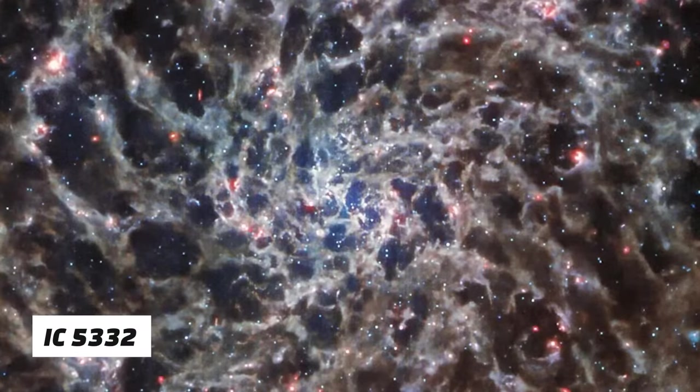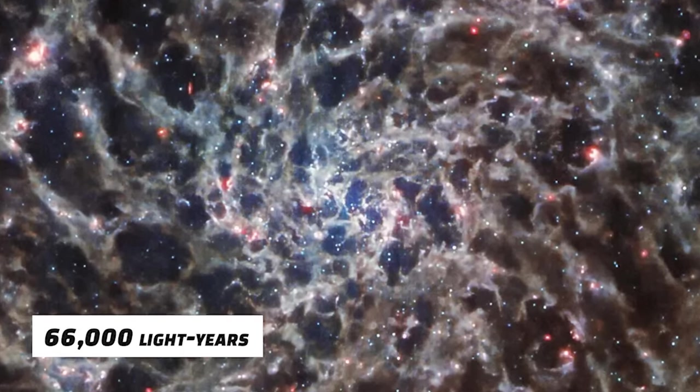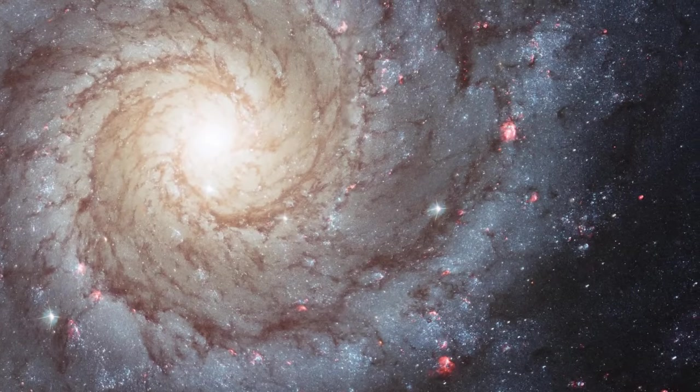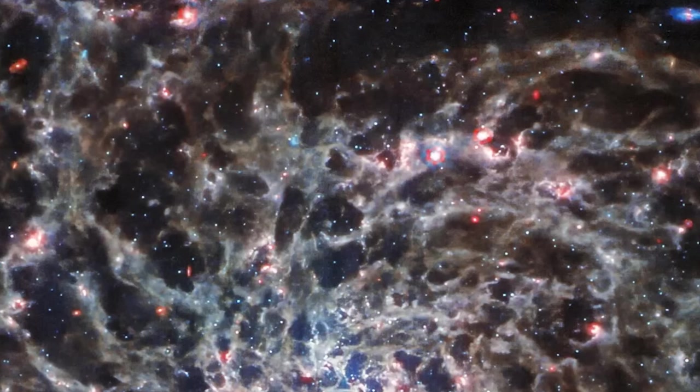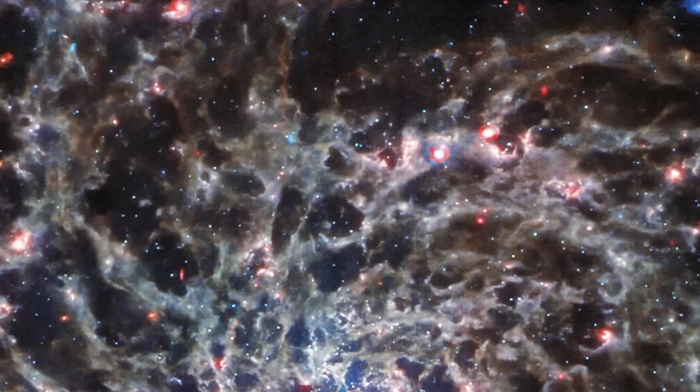IC 5332 has a diameter of around 66,000 light-years, making it approximately two-thirds the size of the Milky Way. This galaxy is famous for its orientation toward Earth, which affords us this wonderful picture.